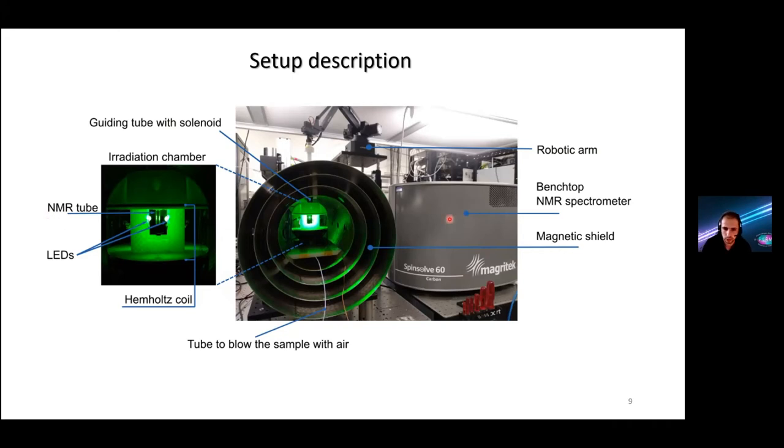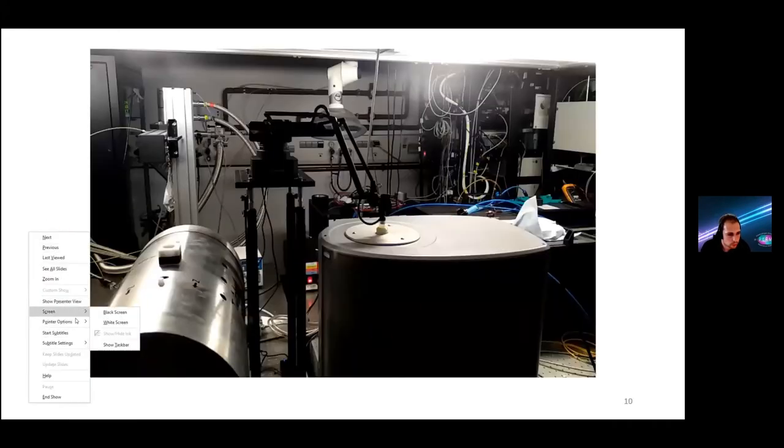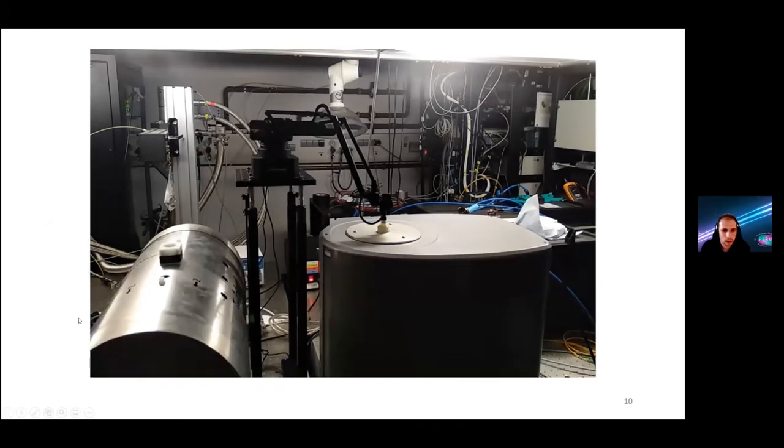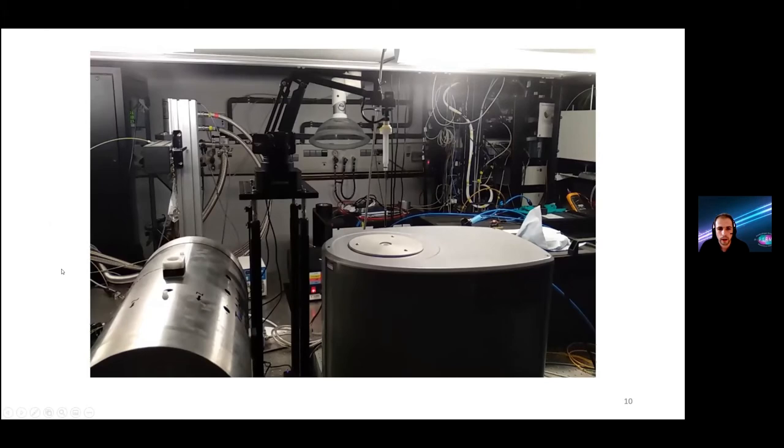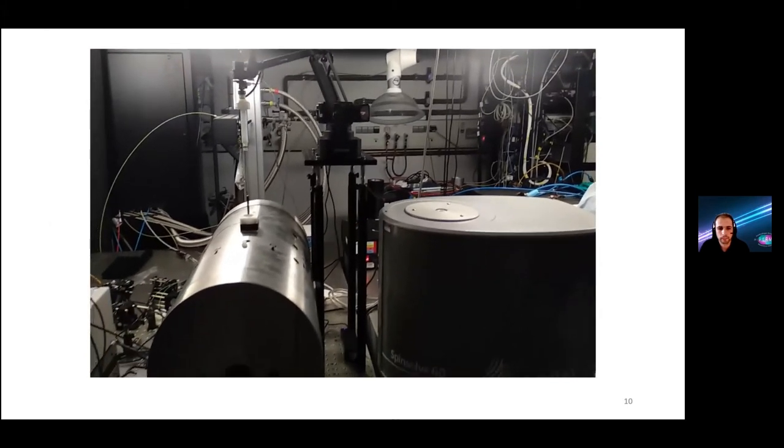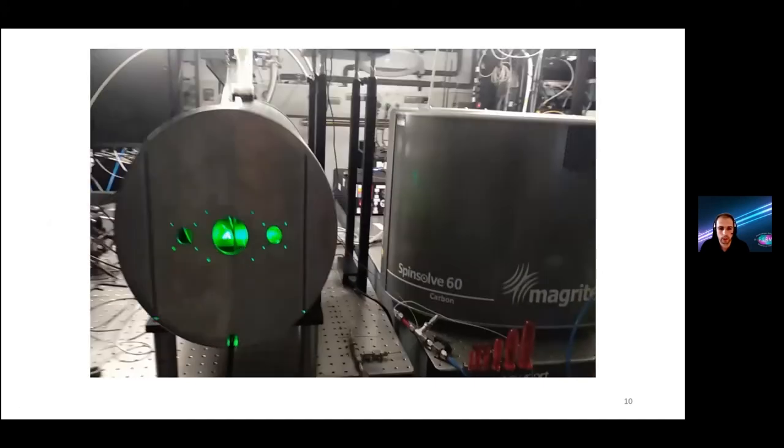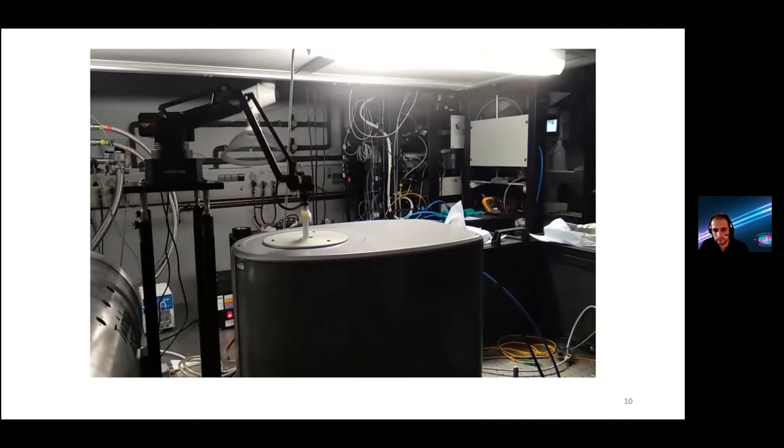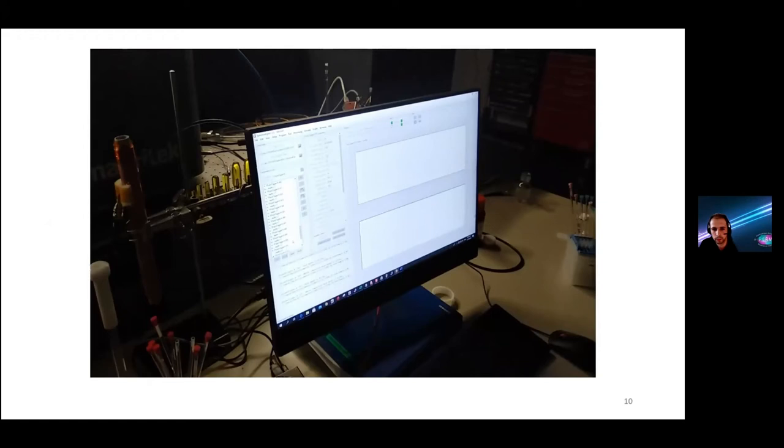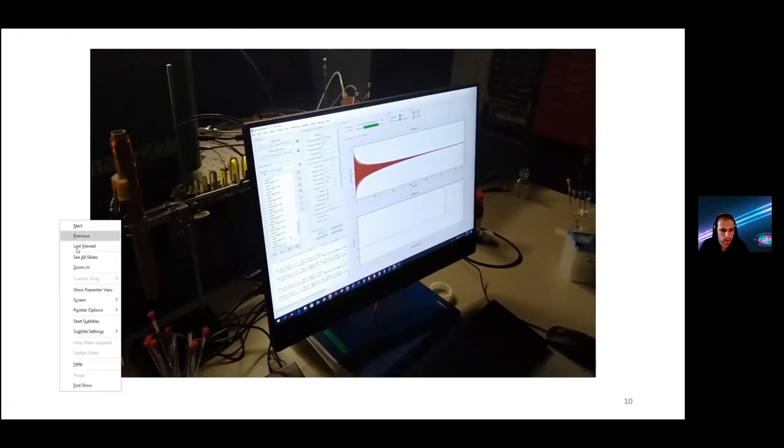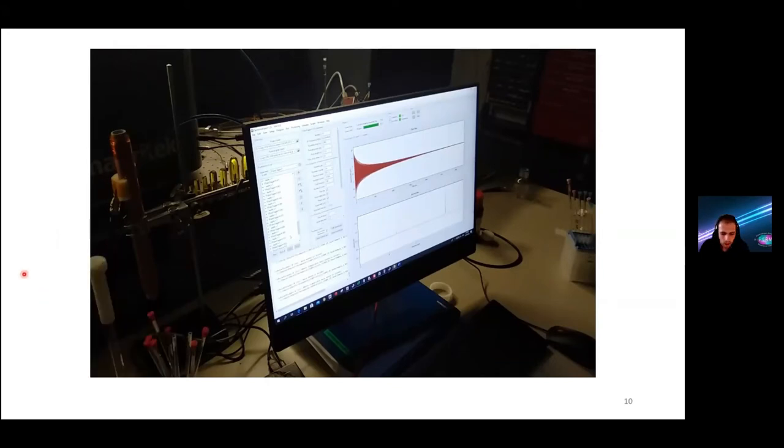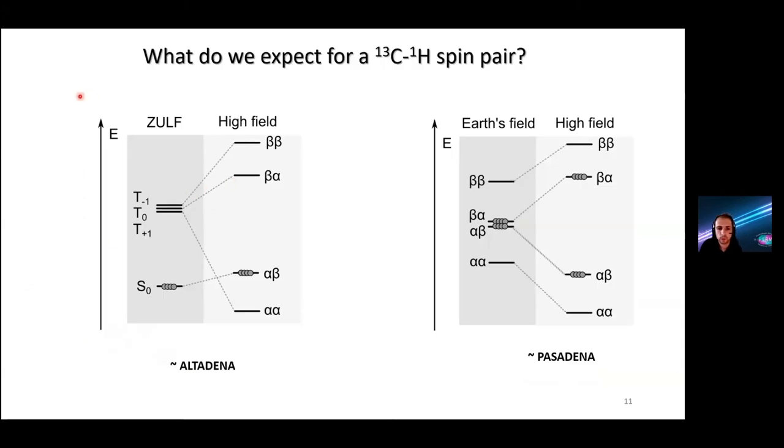In a few days of writing code we assembled the whole experiment. Here I have a short demonstration how it actually happens. So the arm takes a sample out of magnet, brings it to the shield, LEDs are turned on, the sample is irradiated, and the sample is put back. The trigger signal sends to the spectrometer and it acquires the spectrum.